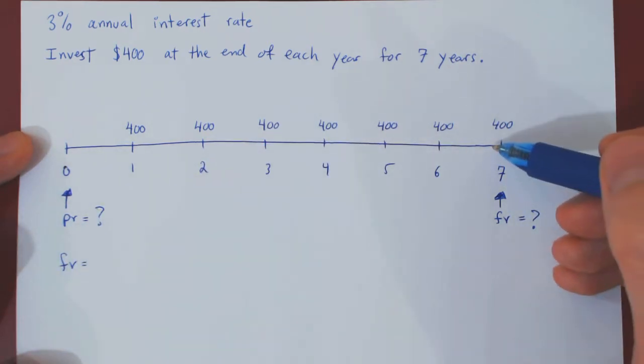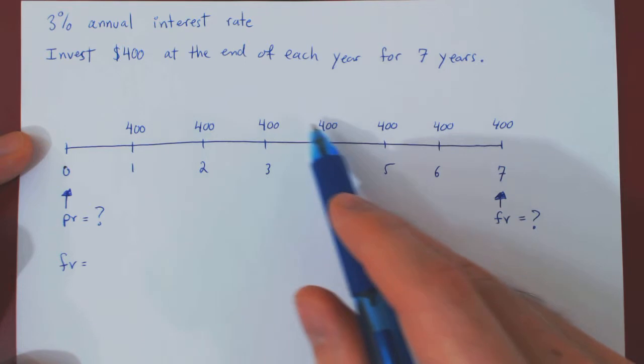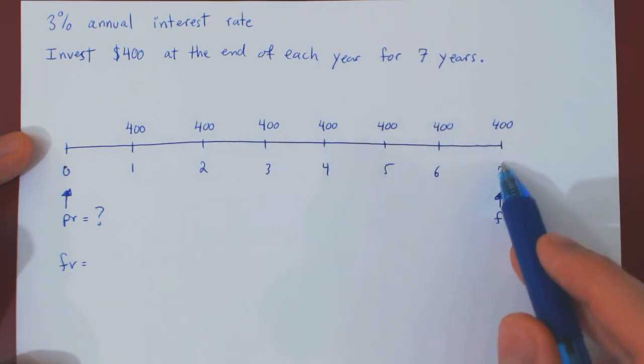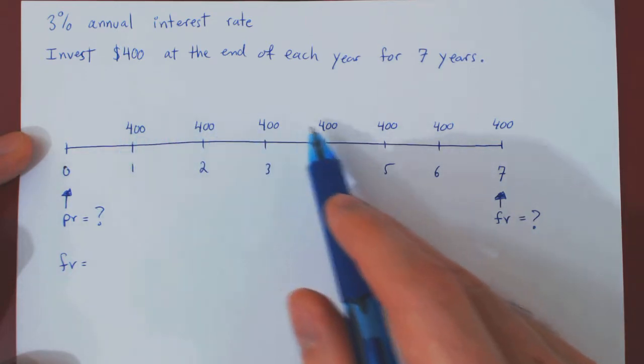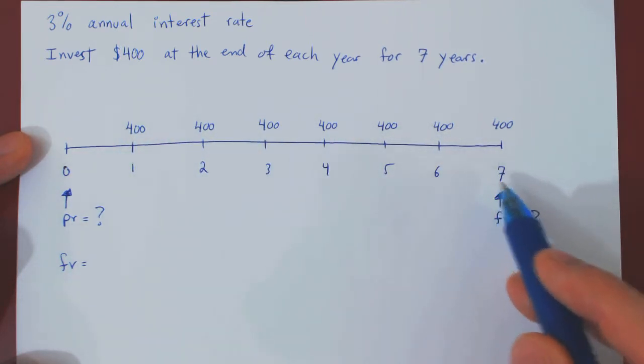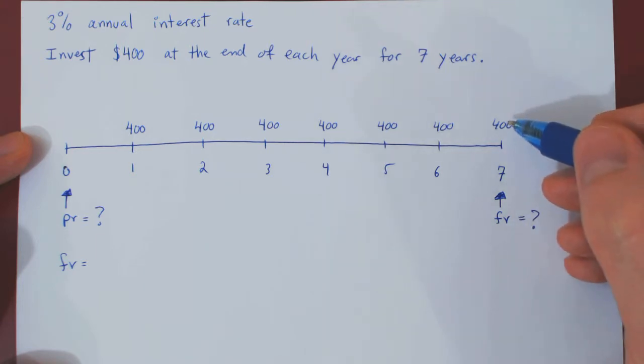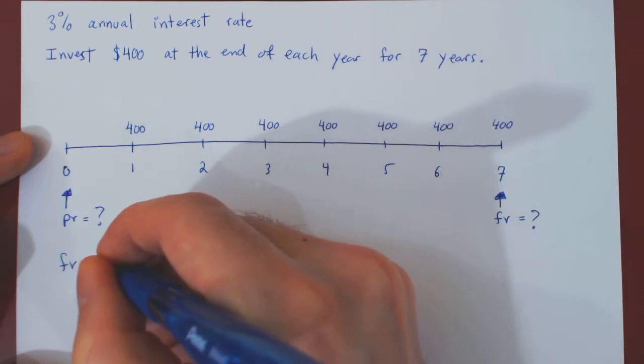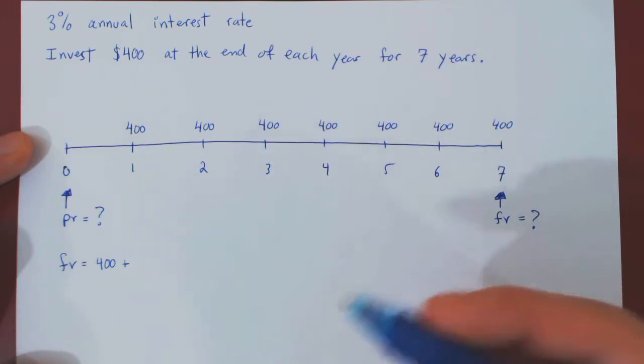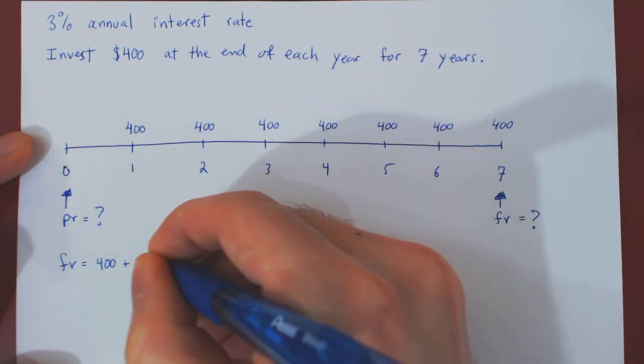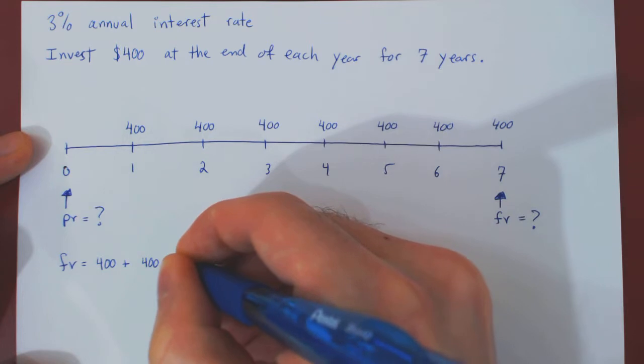Well, we want the value of those seven investments at this particular time. So we have to bring each amount of $400 at time 7, the end of the seventh year. We'll start with this one. 400 is already here, so this is worth 400. Plus, the value of this investment moved forward one unit of time. So this will be 1.03 times 400, or if you prefer, 400 times 1.03.